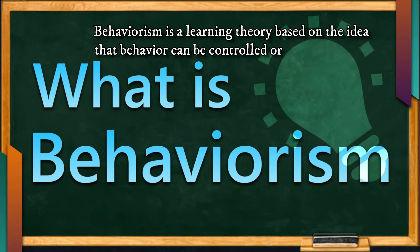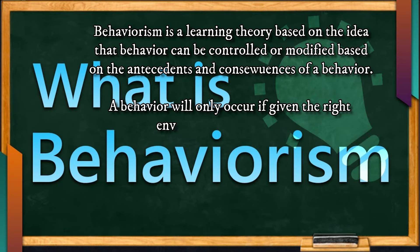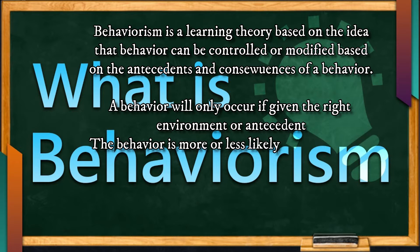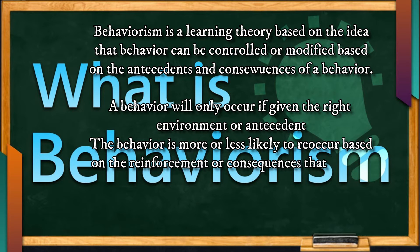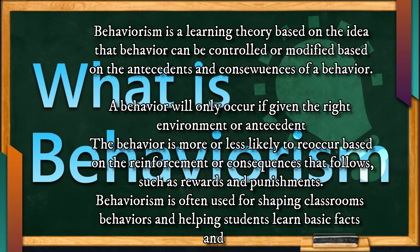Behaviorism is a learning theory based on the idea that behavior can be controlled or modified based on the antecedents and consequences of a behavior. A behavior will only occur if given the right environment or antecedent. The behavior is more or less likely to reoccur based on the reinforcement or consequences that follow, such as rewards and punishments. Behaviorism is often used for shaping classroom behaviors and helping students learn basic facts and skills.